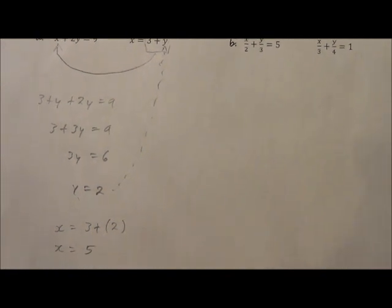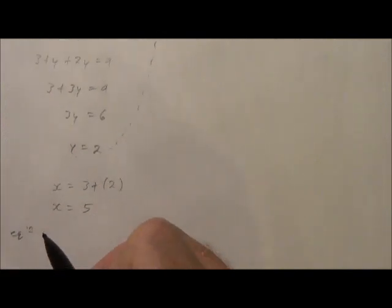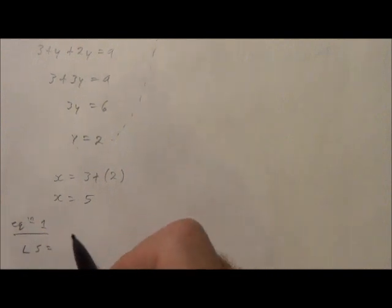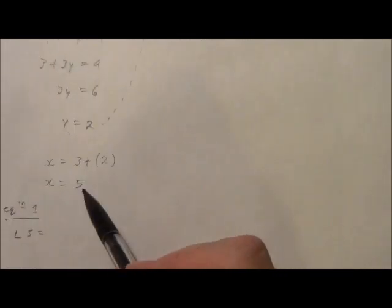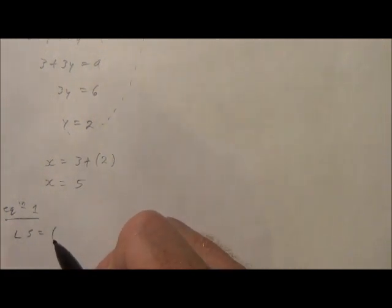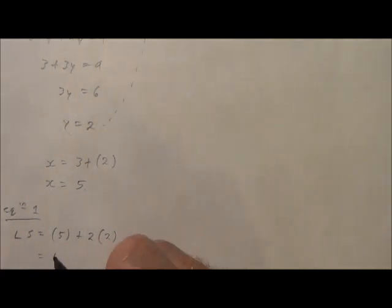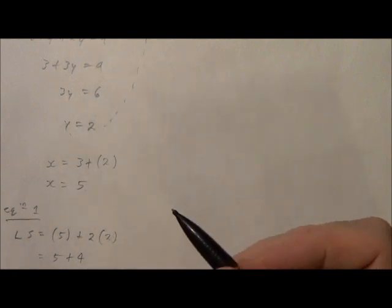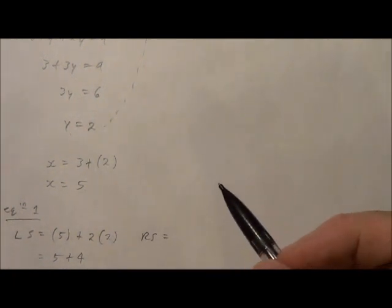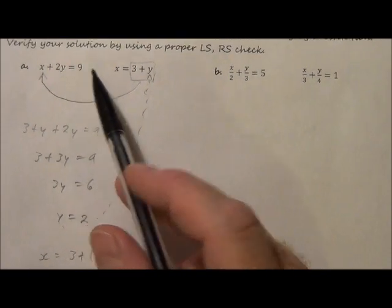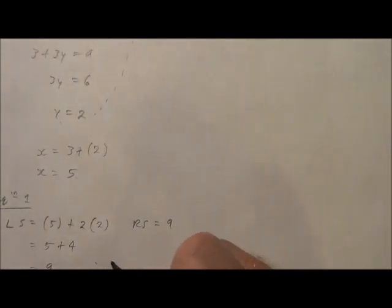Now we still have to check to make sure this is correct. So in equation number 1, the left side equals x, which is 5, plus 2 times y, which is 2. So 5 plus 4 equals 9. And the right side, as you can see, is 9. Therefore, left side equals right side.